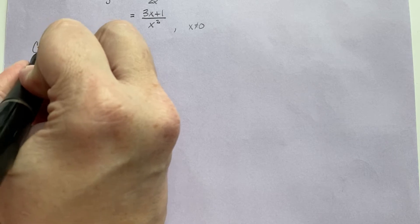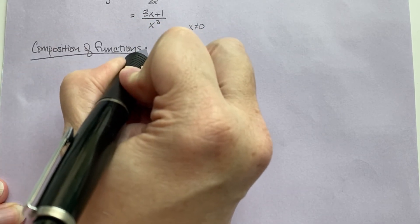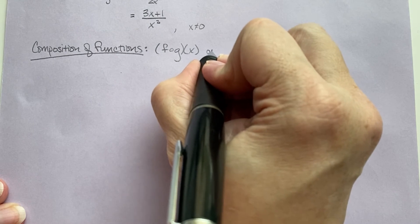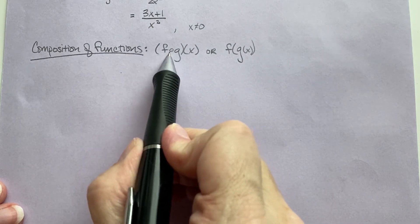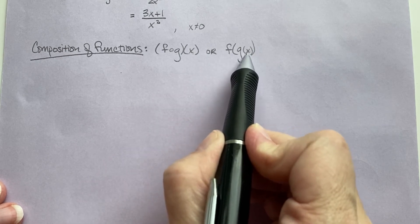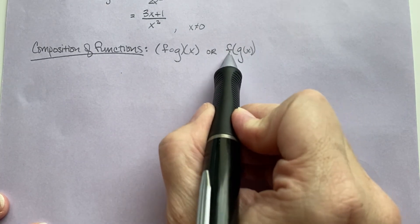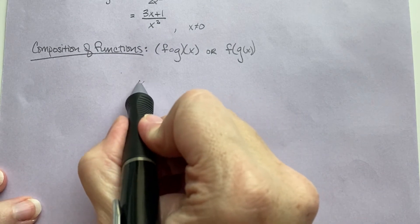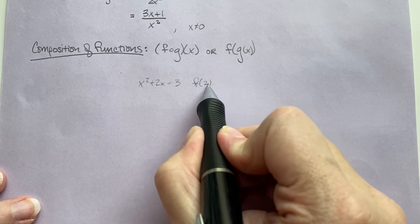Now for composition of functions. It looks like this: f open circle g of x, or f of g of x — that's exactly how you say it. When you see the open circle, it's pronounced f of g of x. Basically, all you're doing is putting this function into any x of the f function, just like you would plug in a number. For example, if we had x squared plus 2x plus 3 and we're finding f of 2, we would just plug in the 2.